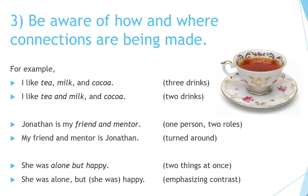Be aware of how and where connections are being made in the sentence. 'I like tea, milk, and cocoa' — these are three different drinks. 'I like tea and milk, and cocoa' — tea and milk are mixed together as one drink. 'Jonathan is my friend and mentor' — that's one person with two roles; 'my friend and mentor is Jonathan' because 'friend and mentor' is like one item. 'She was alone but happy' — she can be two things at once. Adding a comma emphasizes the contrast.